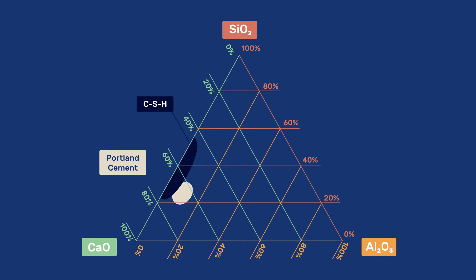Calcium silicate hydrate, or C-S-H, the main hydration phase of cement, also appears in this diagram. It has a lower alumina content than anhydrous Portland cement and a slightly higher silica content. Calcium hydroxide, the other main compound produced by cement hydration, lies on the calcium oxide angle of the diagram.